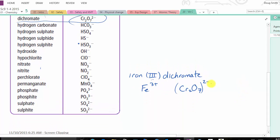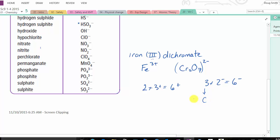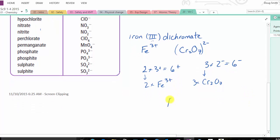To balance these, from practice, I know that I'm going to need it to be 6+ and 6-. That's the lowest common multiple. So 2 times 3+ equals 6+. And then 3 times 2- equals 6-. So I'm going to need 3 of the dichromates and 2 of the iron(III).